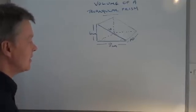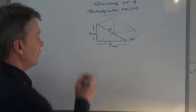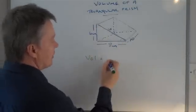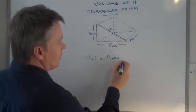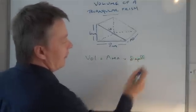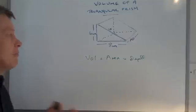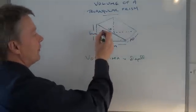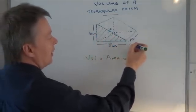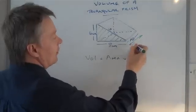What we mean by that is to work out the volume of anything, it would be the surface area at one side multiplied by the depth or the height. What they mean by that is the area of this triangle multiplied by the depth of the unit.